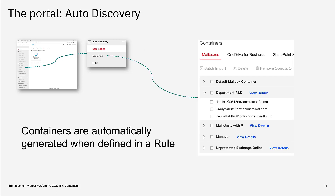If you define a scan profile in advanced mode and define a rule, the related containers are automatically generated. Once your first scan of the Microsoft tenant has finished, you can review the containers in the UI to verify that your implemented rule does what you intended — checking which mailboxes belong to which container generated from your scan profile and rule combination.